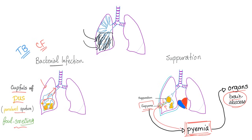Since bronchiectasis involves chronic inflammation, you can expect secondary amyloidosis, especially in the kidney.